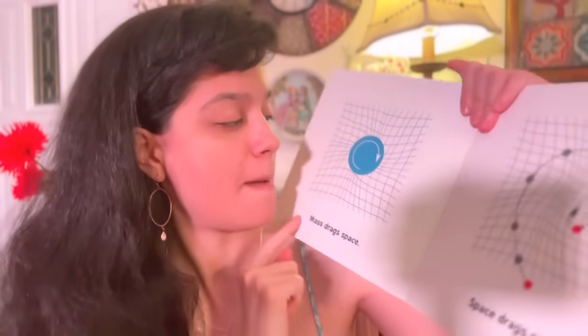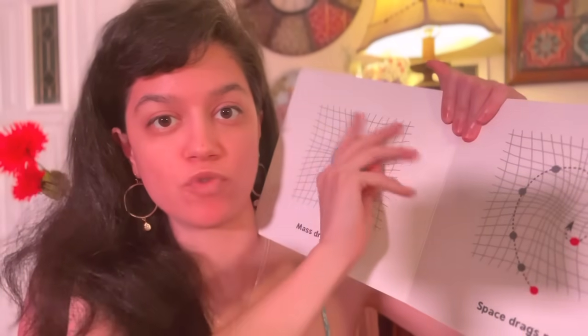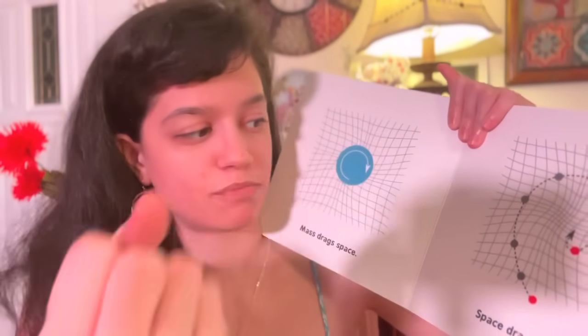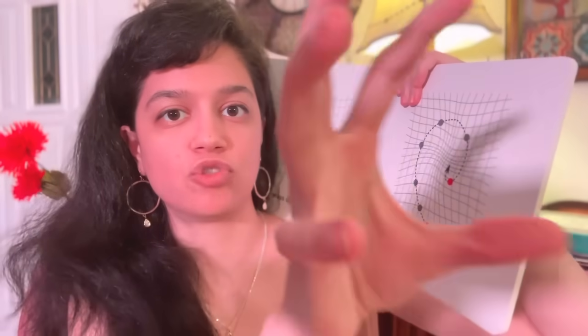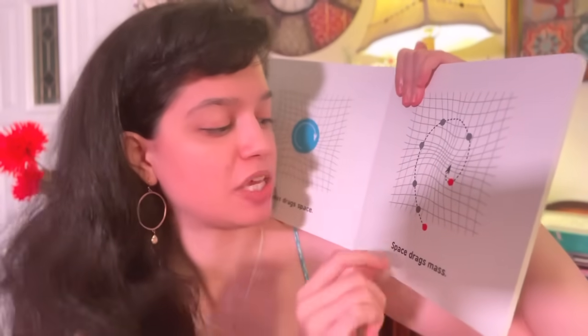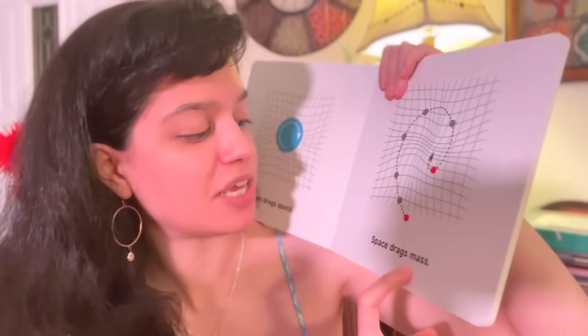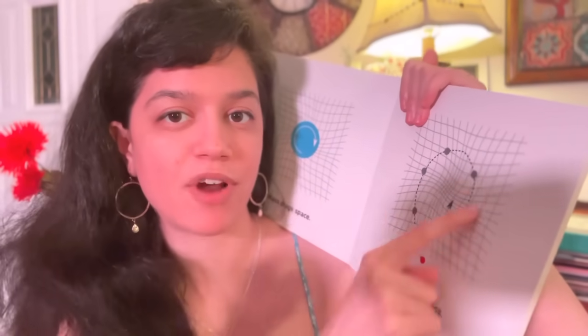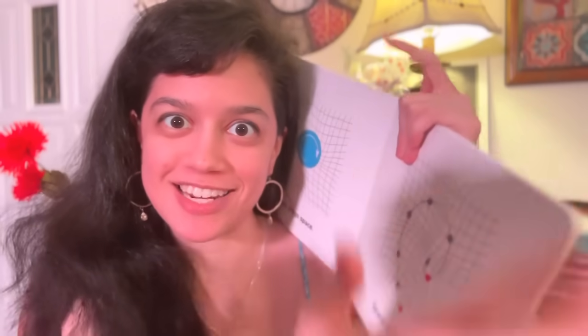Mass drags space — it moves it around, it kind of just pulls it. It's like a tractor beam. Space drags mass. It's an interconnected sort of wall. So it's like a dance between space and mass. That's crazy.